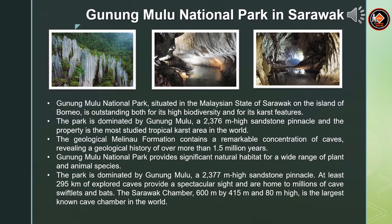Gunung Mulu National Park, situated in the Malaysian state of Sarawak on the island of Borneo, is outstanding both for its high biodiversity and for its karst features. The park is dominated by Gunung Mulu, a 2,376 m high sandstone pinnacle, and the property is the most studied tropical karst area in the world. The geological formation contains a remarkable concentration of caves, revealing a geological history of over 1.5 million years. At least 295 kilometres of explored caves provide a spectacular sight and are home to millions of cave swiftlets and bats. The Sarawak Chamber, 600 m by 415 m and 80 m high, is the largest known cave chamber in the world.